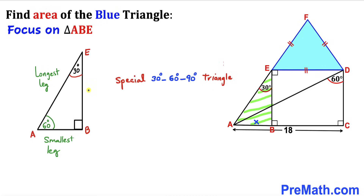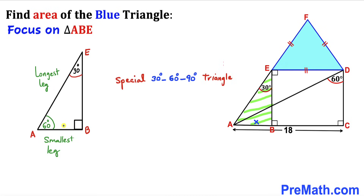In a 30-60-90 triangle, the longest leg is twice the smallest leg. In other words, if the smallest leg is X units, then the longest leg is 2X. So therefore our leg AE turns out to be 2X, since our smallest leg is X.